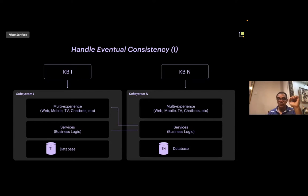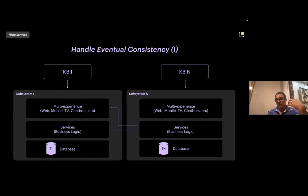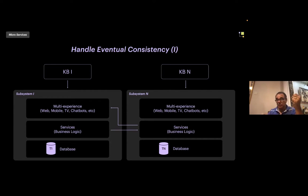In the case where two different knowledge bases have two subsystems that share a table, you need to know who the data owner is so that they are the ones updating the data. Assuming KB1 owns a customer table, when you modify any piece of data, it will update the datum in KBN. But that process — which is synchronous — may fail. You need to be certain it's robust enough so the same datum is not recorded multiple times. You need to be especially careful here.